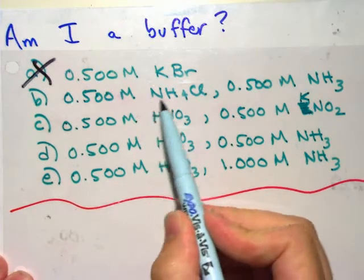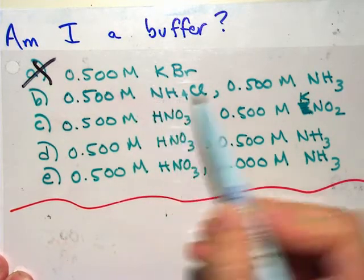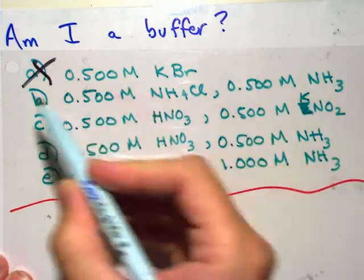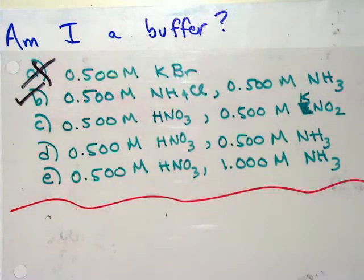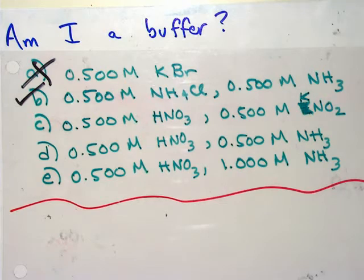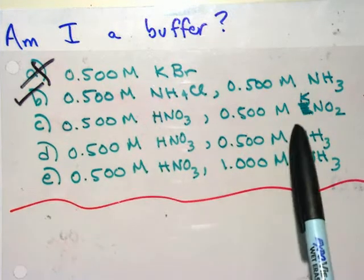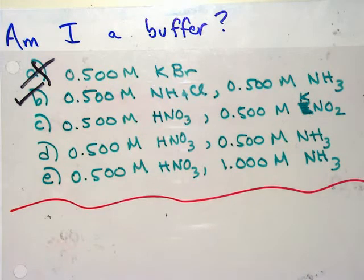Let's look at C. I have a couple of problems with C. First problem is that I have a strong acid here, and I need things that are weak. The second problem is this is not even the conjugate of it. So for many reasons, this does not work. How about D? D also has a strong acid here, and I don't even have its conjugate. So D just doesn't work either.